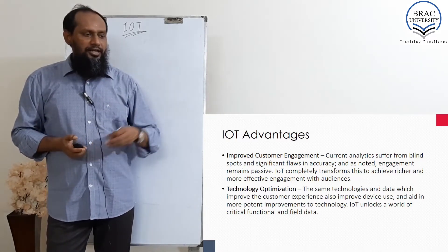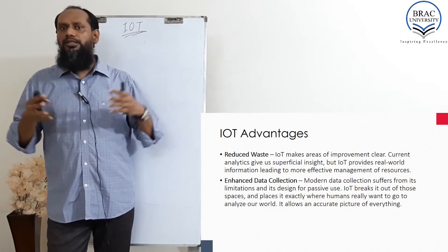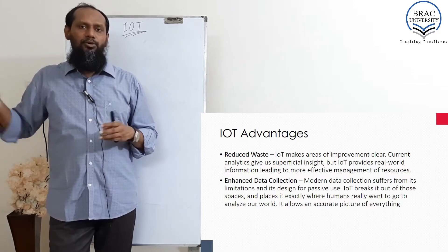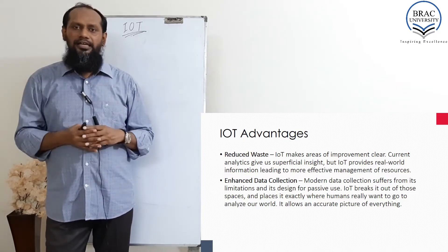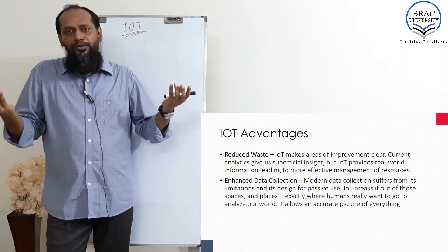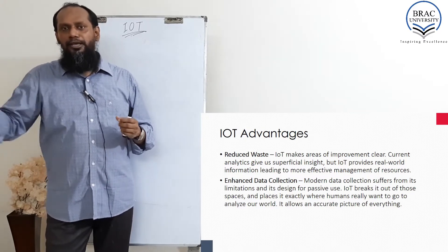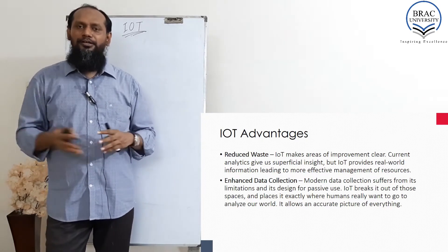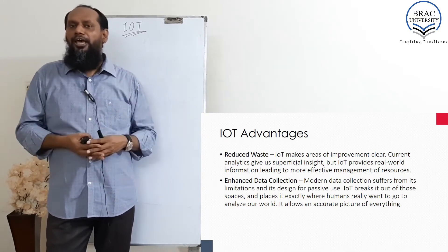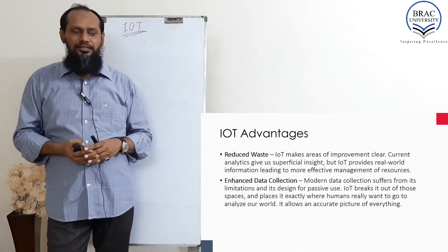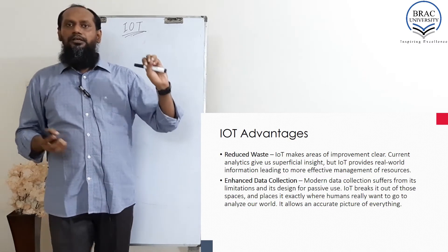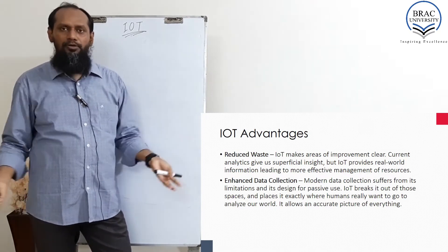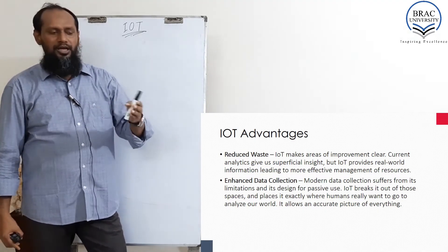Another advantage is reducing resource waste. If I don't stay in a room, the lights and fan should be turned off. If I forget to turn off my AC when going out, my system should be able to do it. A very common thing in my life — when I put milk on the burner, it almost always overflows and makes the burner dirty. An IoT device could help handle that. We can reduce waste of battery and power this way.